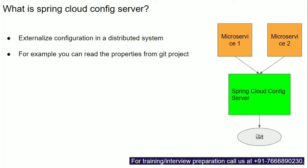In the microservices world, there is a concept of Spring Cloud Config Server, which can read configuration from a source — Git in this case. You check your configuration into the Git server, and Spring Cloud Config Server reads the configuration from your Git project. Whenever you change the Git project, Spring Cloud Config Server reads the latest configuration and makes it available to your microservices.